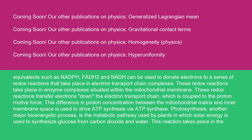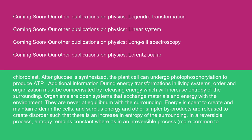Photosynthesis, another major bioenergetic process, is the metabolic pathway used by plants in which solar energy is used to synthesize glucose from carbon dioxide and water. This reaction takes place in the chloroplast. After glucose is synthesized, the plant cell can undergo photophosphorylation to produce ADP.